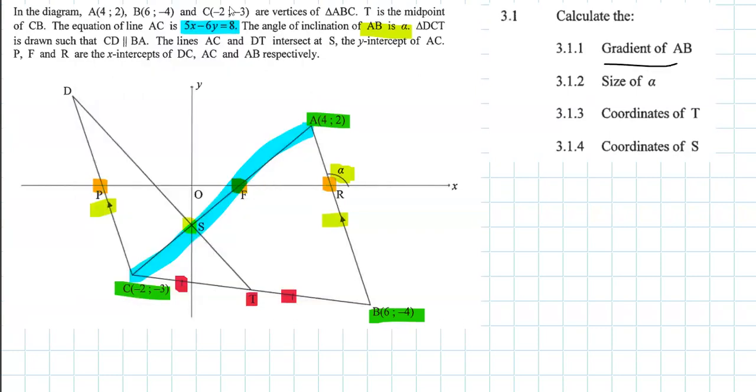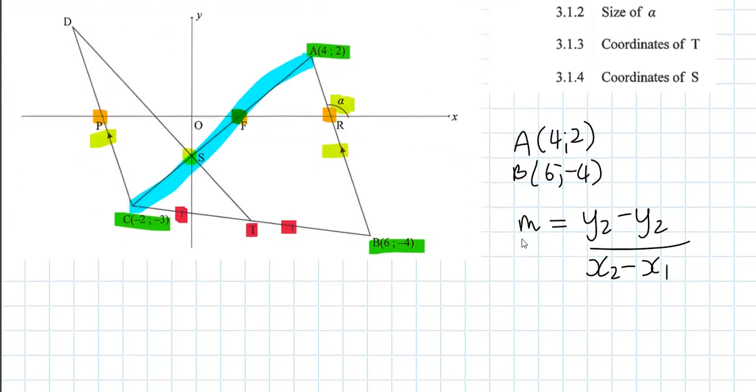Number 3.1.1: calculate the gradient of AB. Right, so straight away we know we have A and B. A is (4, 2) and B has been given as (6, -4), so we can just substitute into our gradient formula. The gradient is shown by a small letter M. It's Y2 minus Y1 all over X2 minus X1.